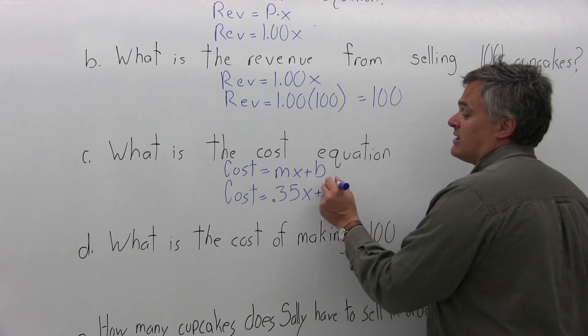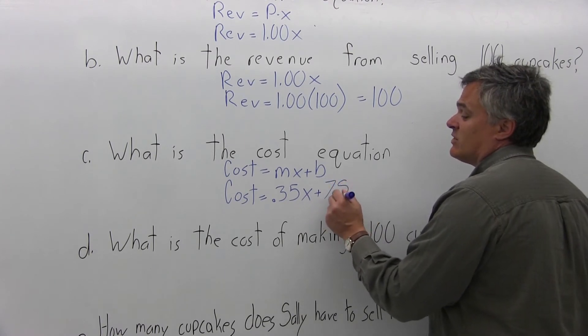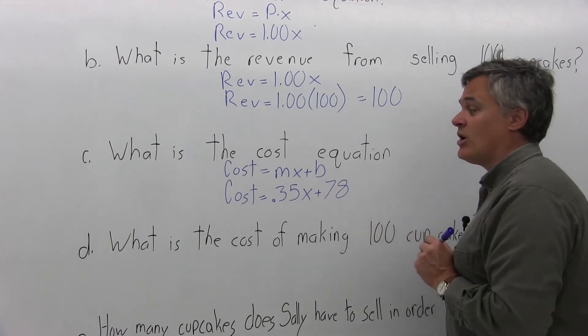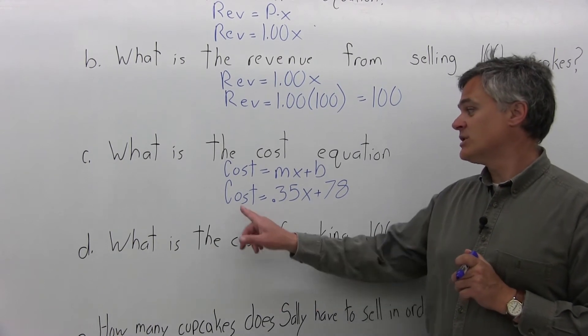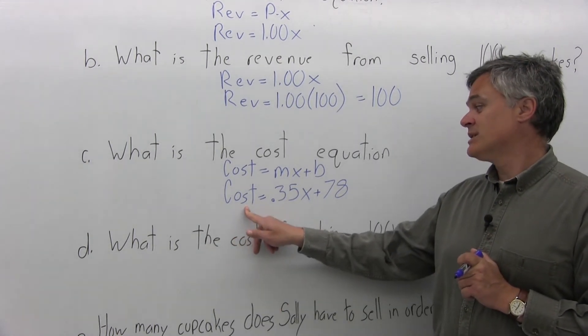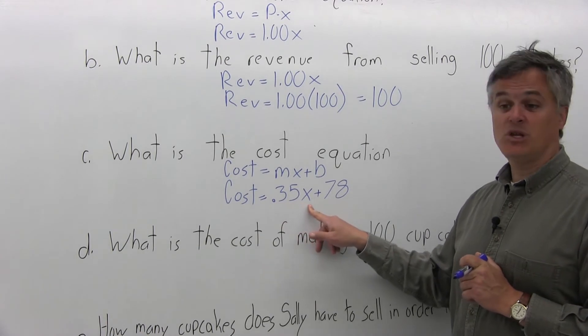And B, the fixed cost, the cost to stay in business even if no cupcakes are sold, is $78. So the cost equation for this problem is cost equals .35X plus 78.